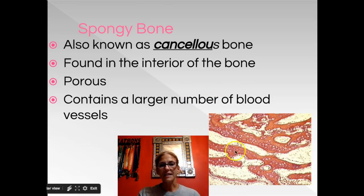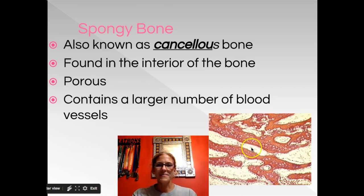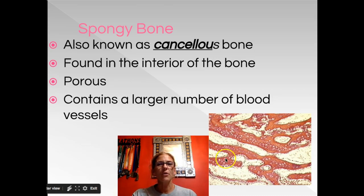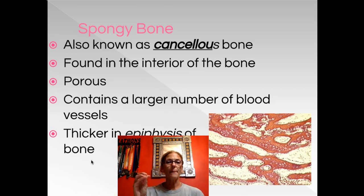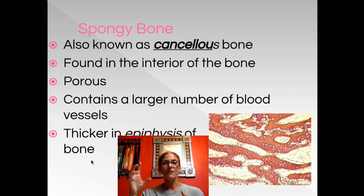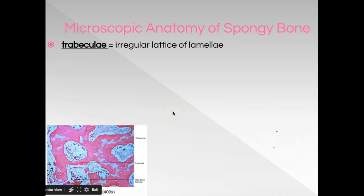Spongy bone contains a large number of blood vessels and within those spaces you find bone marrow. In your long bones, like in your arms and legs, the ends of your bones are called the epiphysis — 'epi' means above or upon. At the ends of a long bone you find those knobs are filled with cancellous tissue, and then there's a thin layer of compact bone on the outside.